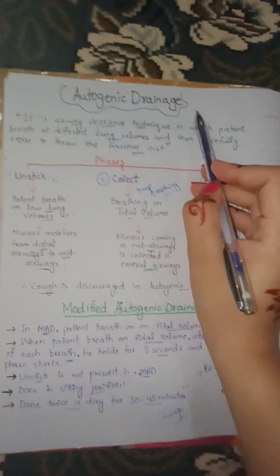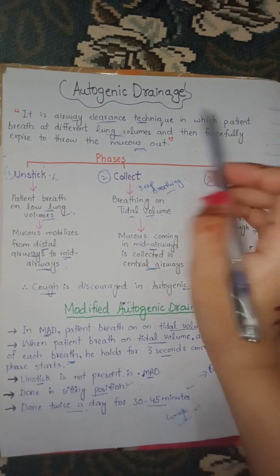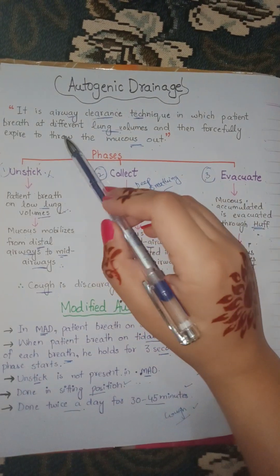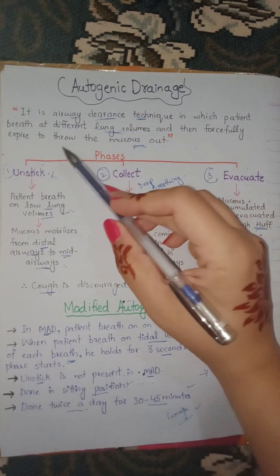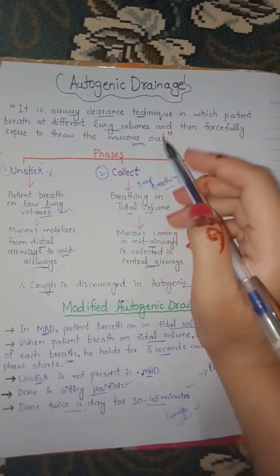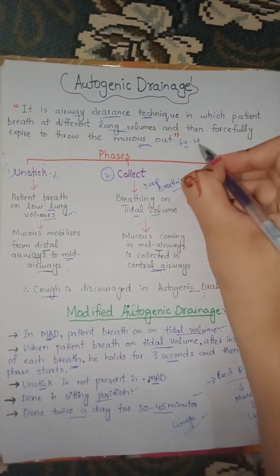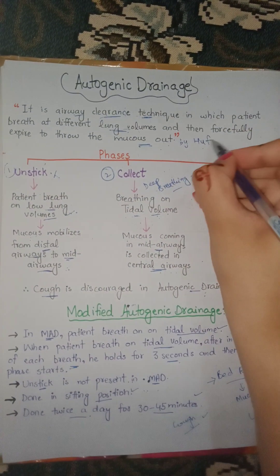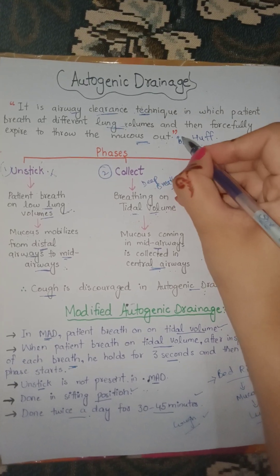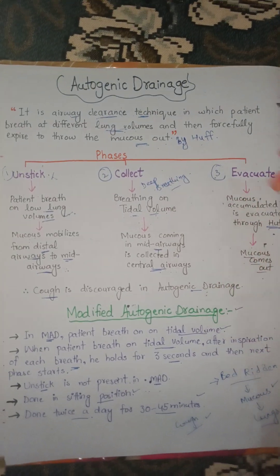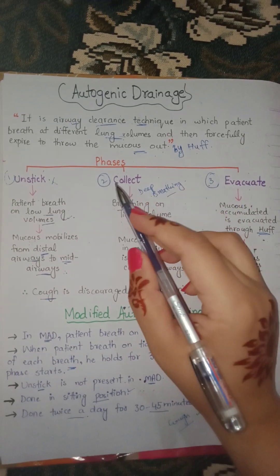Autogenic drainage is an airway clearance technique in which the patient breathes at different lung volumes and then forcefully expires to throw the mucus out by huff. Note that cuff is discouraged in autogenic drainage.